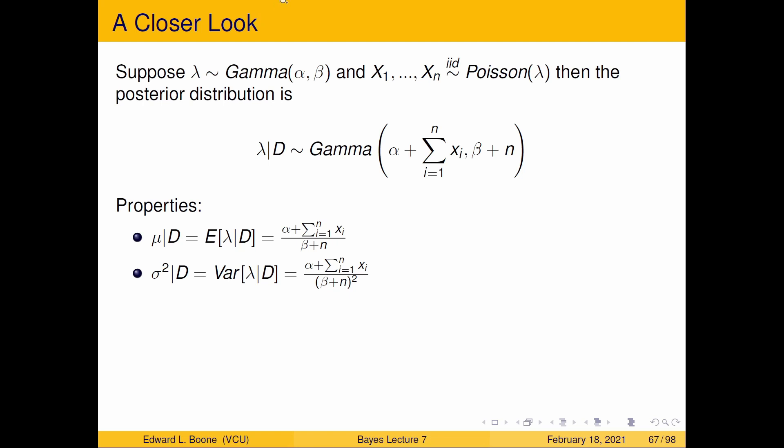So again, suppose lambda is going to be the parameter in a Poisson distribution, and we're going to have it have a prior distribution of Gamma(α, β), and our random variables X₁ through Xₙ will come from this Poisson(λ).